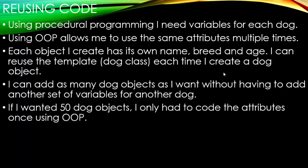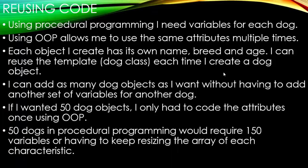If I wanted 50 dog objects, I only had to code the attributes once using object-oriented programming. 50 dogs in procedural programming would require 150 variables because we have name, we have breed, and we had age. Or I'd have to keep resizing the array of each characteristic every time I wanted to add a new dog. And then I got to try to keep track of what index reference what. That makes it very, very inefficient when I'm going to update my code.